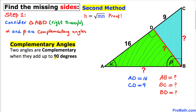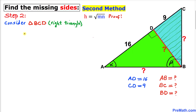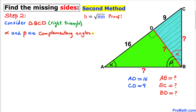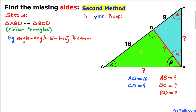Now let's focus on triangle BCD. We know this angle is 90 degrees, and we know the other angle is 90 degrees as well. If one angle is beta, then the remaining angle must be alpha, because alpha and beta are complementary. Therefore triangles ABD and BCD are similar triangles by the Angle-Angle (AA) similarity theorem.